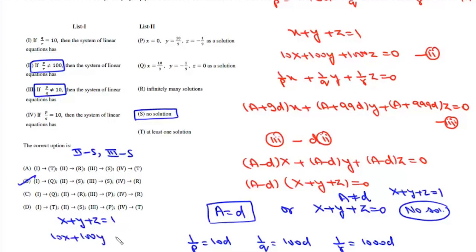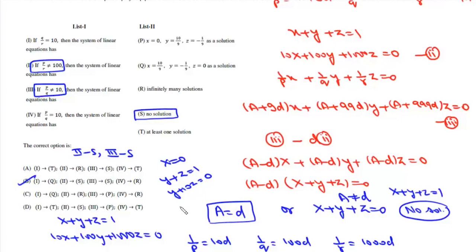Putting X = 0: Y + Z = 1 and Y + 10Z = 0. Subtracting gives Z = -1/9 and Y = 10/9. So one solution is (X, Y, Z) = (0, 10/9, -1/9).